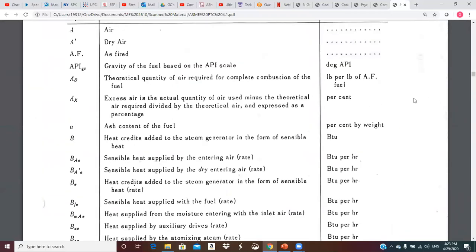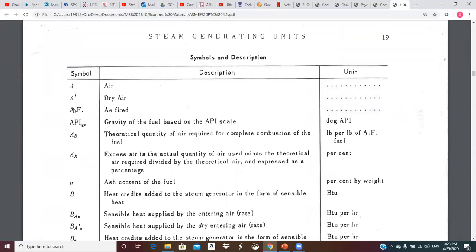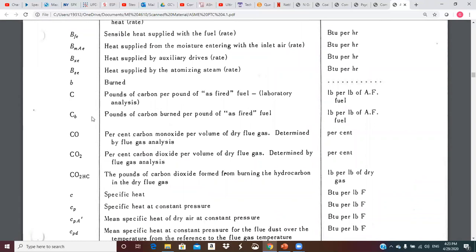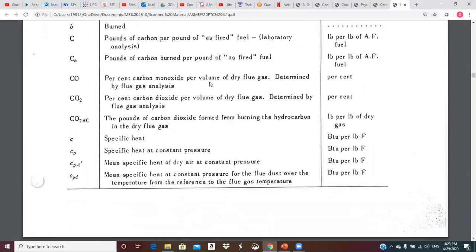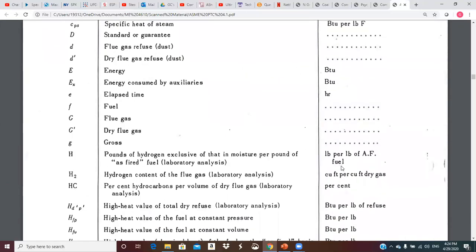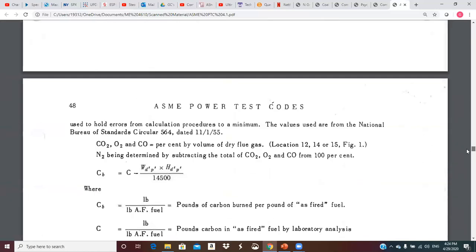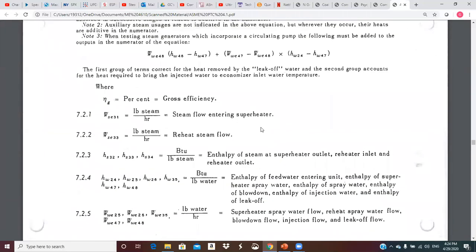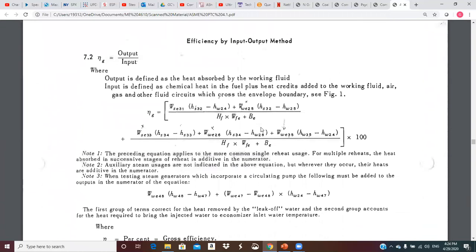And you get all of these wonderful equations. All of these subscripts are defined. The number of locations are on the diagram. Yes, we should look at the abbreviations. Here we go. Here's all of the abbreviations that are used in the equations. A, A prime, AF. Little a is ash content and it gives the units. And so it's, like I said, it's a very detailed. C capital C little B pounds of carbon per pound of as fired fuel. So that would come from the ultimate analysis on the fuel. CO percent carbon monoxide per volume of dry flue gas determined by flue gas analysis. So you would measure that with your analyzer.